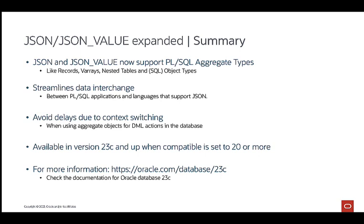To summarize, starting in database 23c, the JSON and JSON value functions support PL/SQL aggregate types as source and return types. By doing so, it is easier to exchange data between the Oracle database and systems that rely on JSON data for data interchange. Working with PL/SQL aggregates enables, besides the flexibility of PL/SQL in general, the use of bulk inserts, updates, and deletes by removing context switching, which increases the throughput and speed of the interaction with the database. For more information about the new options for aggregates and JSON, go to the documentation section on oracle.com/database/23c.